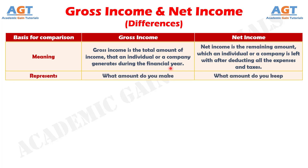Number 2: gross income includes all the amount that you make, whereas net income includes all the amount that you keep.